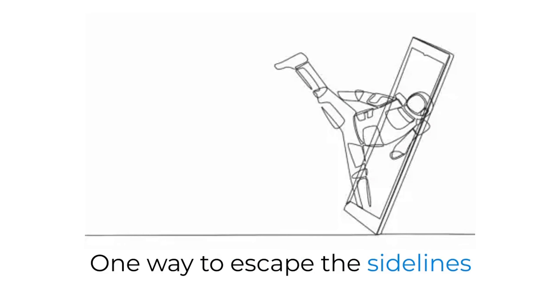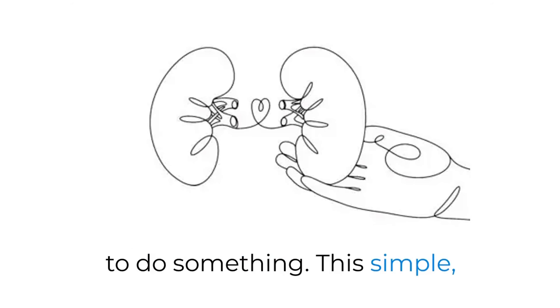One way to escape the sidelines is to be given the green light to do something. This simple but effective image sums up the idea of transforming an idle state into an active one.